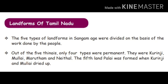Again, reading the book lines: out of the five thinais, only four types were permanent — Kurunji, Mullai, Marudam and Neidhal. The fifth land, Palai, was formed when Kurunji and Mullai dried up. How is the Palai region formed? When Kurunji and Mullai dried up, it is called Palai.